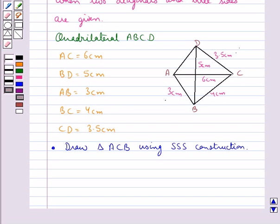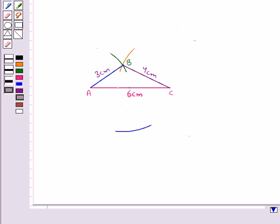Now in the next step we need to locate the point D which is at a distance of 5 cm from the point B and 3.5 cm from the point C. Then in the next step with B as the center, draw an arc of radius 5 cm. So as you can see we have drawn this arc. Now the point D would lie on this arc.